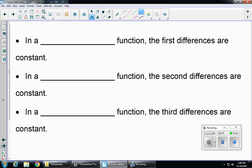Because in a linear function, we know that our first differences are constant. Linear, an example of that, is something like 5x plus 2. The reason it's linear is because it has an exponent of 1.